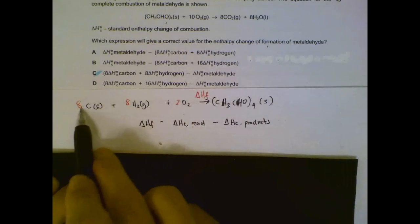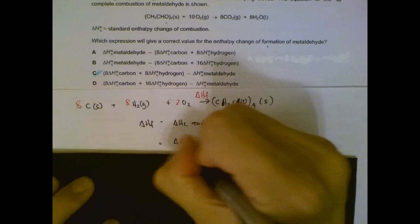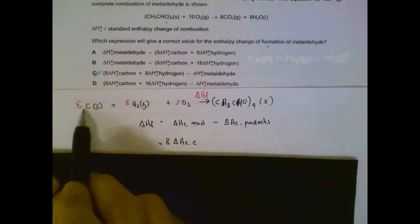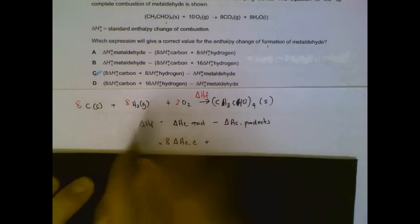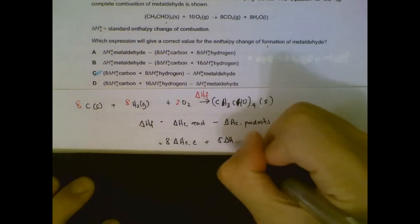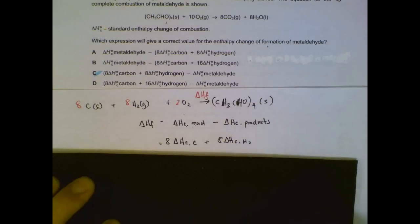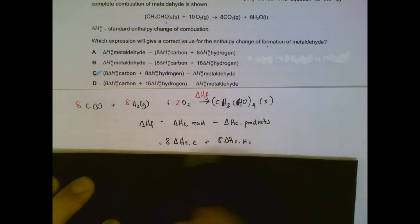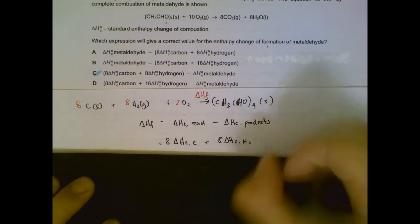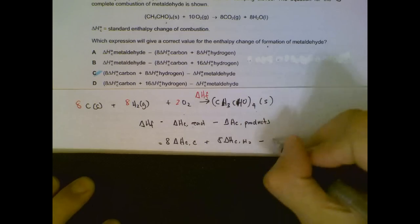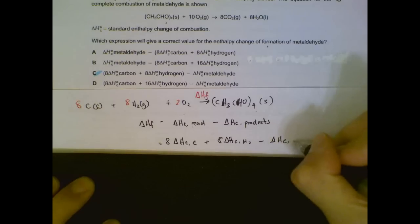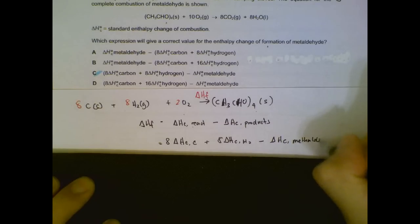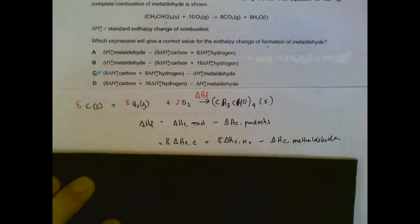Reactants we have 8 times heat of combustion of carbon, 8 times heat of combustion of hydrogen. There is no heat of combustion for oxygen. It itself supports combustion. So this is our reactants. Then we go to the product side. We have 1 mole of methanal formed. Heat of combustion of methanal. So, option C will give us the expression for heat of formation.